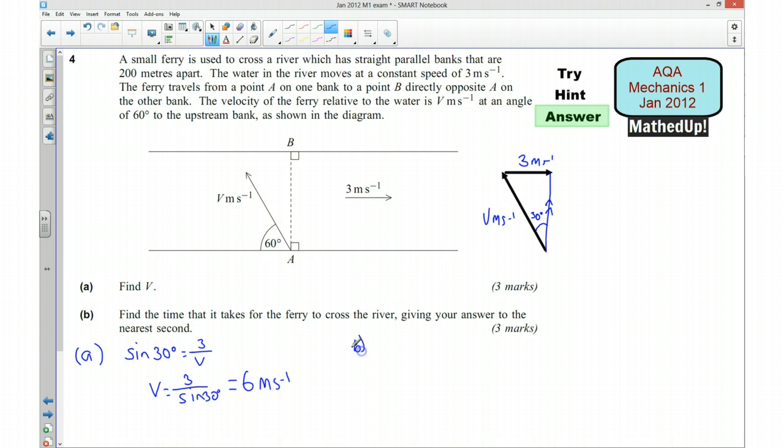Okay, so we now know what V is. Part B, we need to find the time that it takes for the ferry to cross the river and giving our answer to the nearest second. Right, so we first of all need to know the resultant velocity here. And my resultant velocity, I can use Pythagoras to work that out. So my resultant velocity is going to be the square root of V squared take away 3 squared.